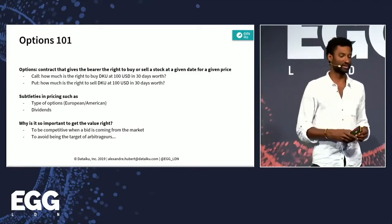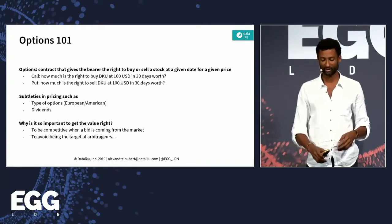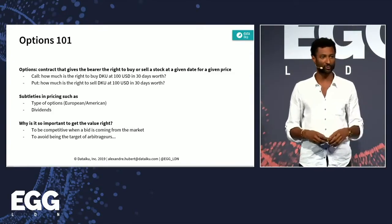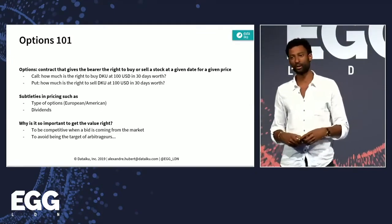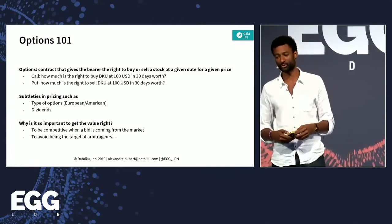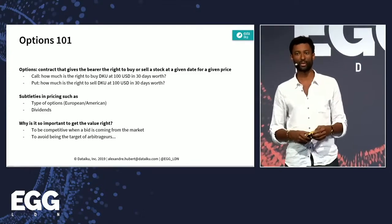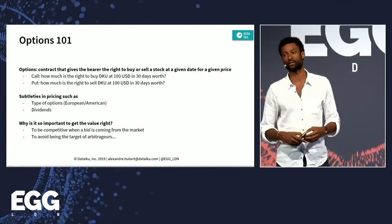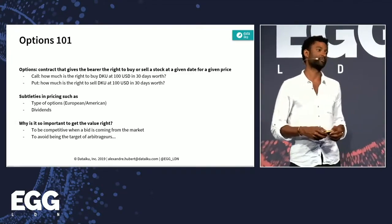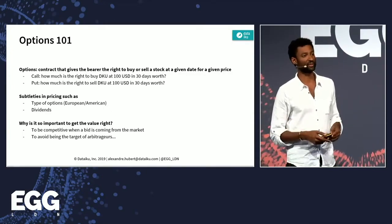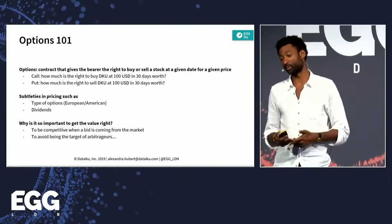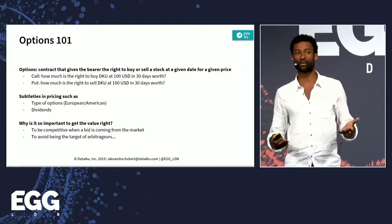A short story of option pricing — options 101. It's important to realize that options have been around for quite a while. They're a very useful financial instrument; they have a bad reputation after what happened in 2008, but they're still very useful. Let's talk about a concrete example. You can be a biscuit manufacturer, and you know that on a monthly basis you're going to buy some wheat. There are lots of different factors that can influence the price of wheat — meteorological, geopolitical tensions, and economical factors.